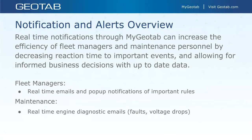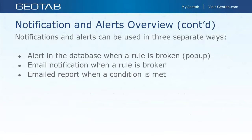Things like excessive speeding — not just five miles an hour over, but maybe someone exceeding 90 miles an hour — those warrant an immediate notification. Keep that in mind as we go through the presentation, and even more so when you're setting things up in your own database: exercise caution and understand when the amount of information you're getting is maybe a little bit too much.